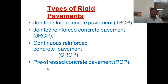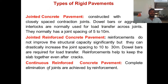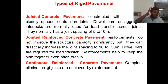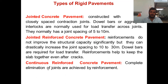Types of rigid pavement: jointed plain concrete pavement, jointed reinforced concrete pavement, continuous reinforced concrete pavement, and pre-stressed concrete pavement. Jointed plain concrete pavement is constructed with closely spaced contraction joints, usually with joint spacing of 5 to 10 meters. On concrete roads you can see panel-like structures formed by these joints, provided for expansion, contraction, and to release temperature stresses. Dowel bars or aggregate interlocks are used for load transfer across joints.